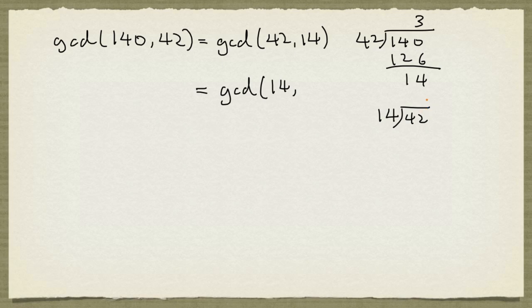So we do a long division here. This time, 14 times 3 goes into 42 evenly, and so we have 0.